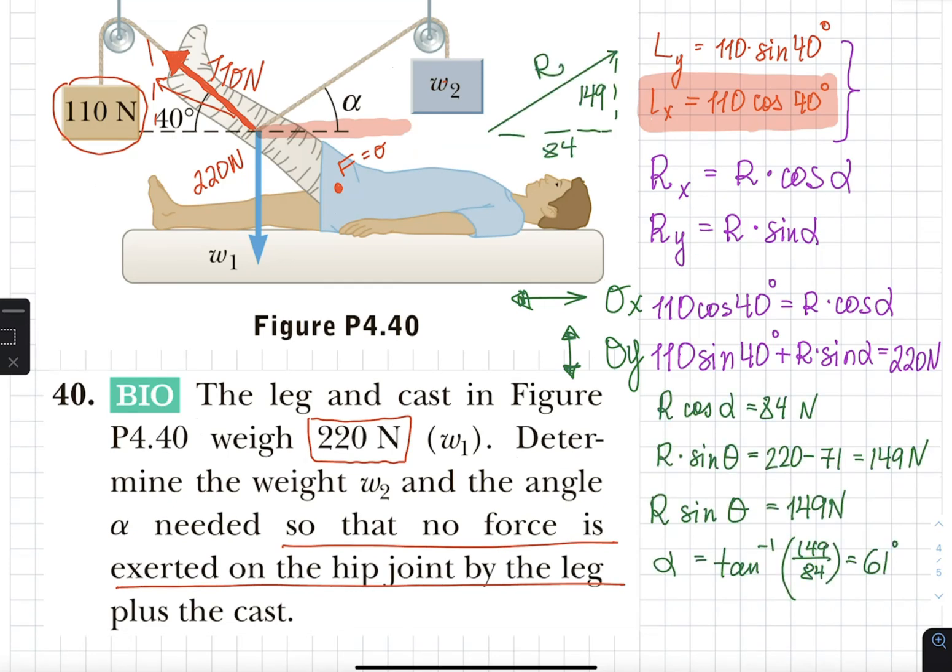Alright, so here are the values. I plugged it all into the calculator and that gave me the values of 149 in this direction. This is the y component of my force on the right and 84 newtons which is the x component of the force on the right.